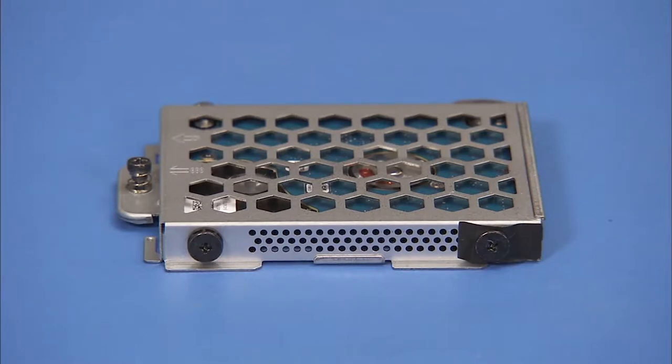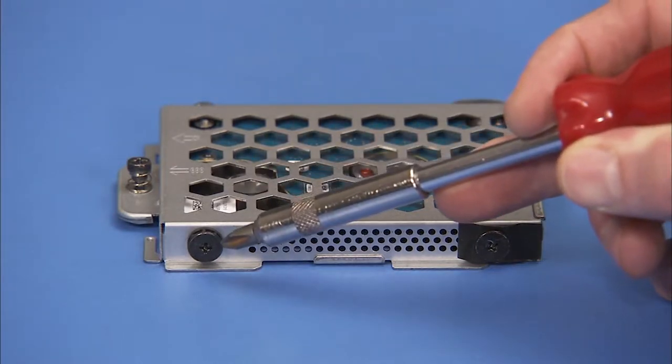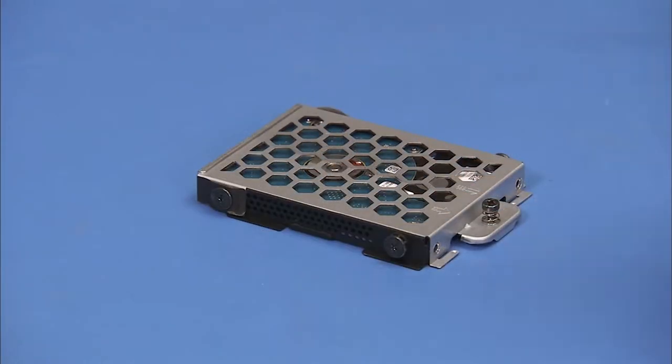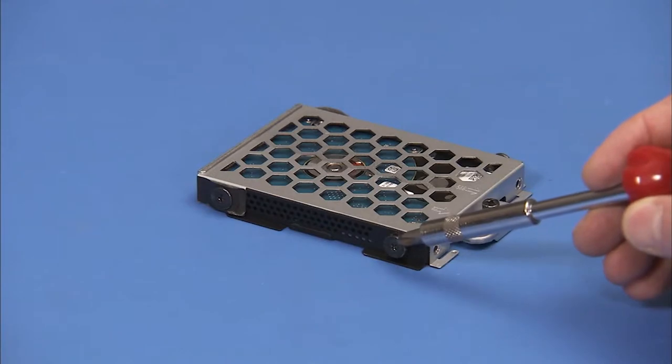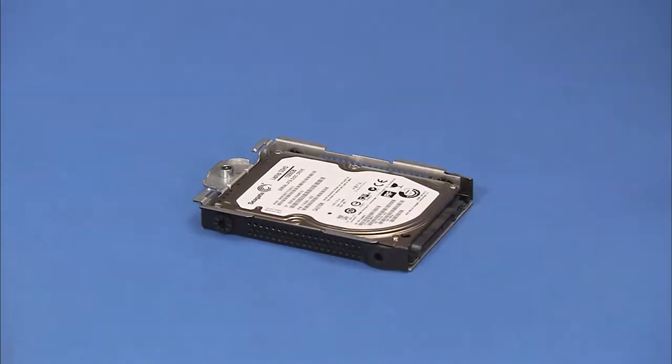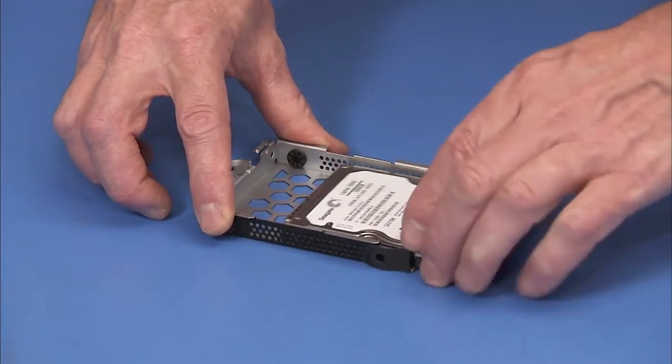To remove the drive from the cage, detach the four black Phillips No. 2 screws on the sides of the hard drive cage. The screws are different than other system screws. Pull the hard drive out of the drive cage.